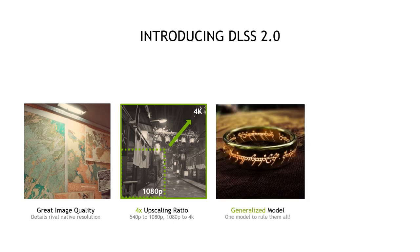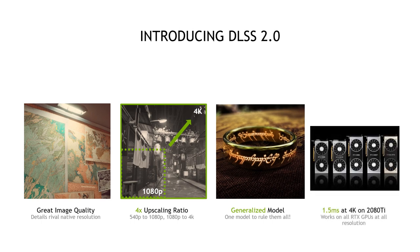DLSS 2.0 is a fully generalized model. When integrating DLSS into new games, we no longer have to go through the labor-intensive process of collecting new training data and training a custom model just for that game. We now maintain one best DLSS model applied to every new game. Lastly, we've also tremendously improved inference speed — the whole algorithm runs about 1.5 milliseconds at 4K on a 2080 Ti. Combined with 4x pixel scaling support, the performance increase from DLSS is really huge.